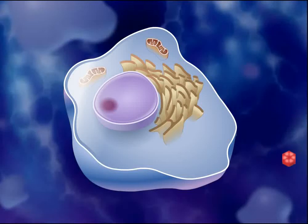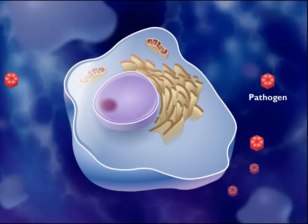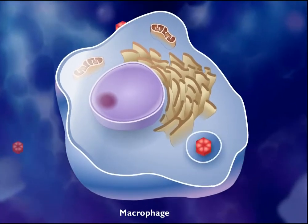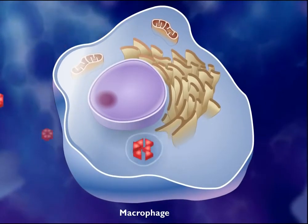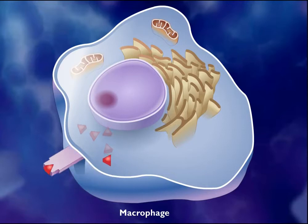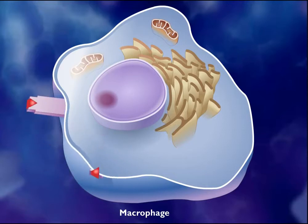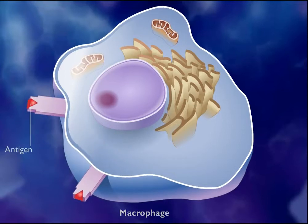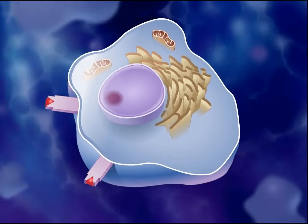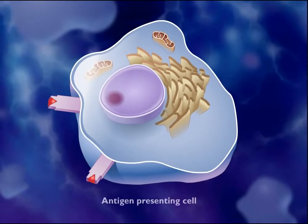Activation of the immune response typically begins when a pathogen enters the body. Macrophages that encounter the pathogen ingest, process, and display the antigen fragments on their cell surfaces. Macrophages with antigen fragments displayed on their surfaces are called antigen-presenting cells.